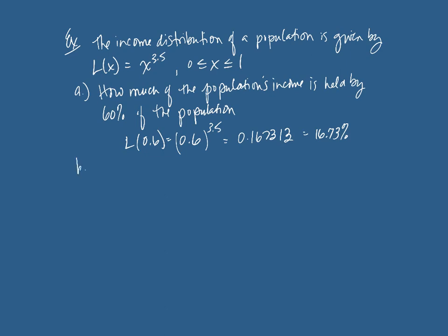So now let's calculate the Gini index. And remember that's one minus two times the integral from zero to one of our Lorenz curve, which is x to the 3.5. So off to the side, again, I'm going to calculate this.